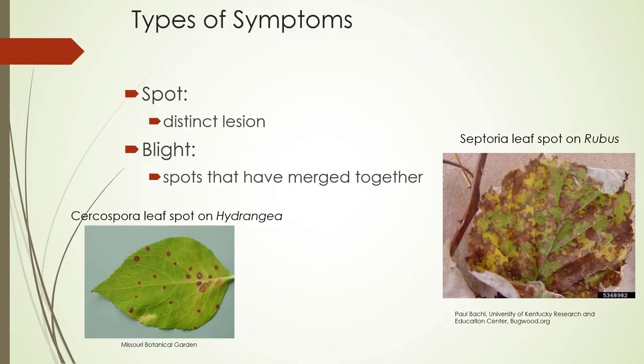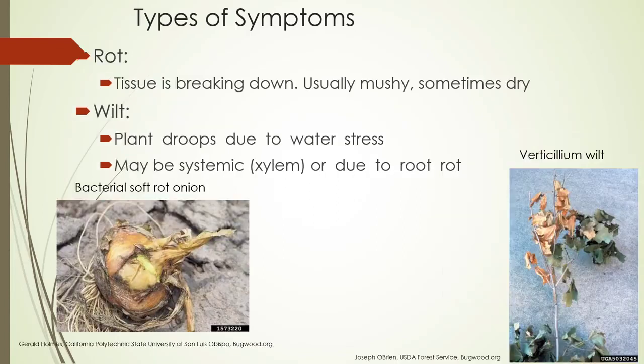Types of symptoms include spots — a distinct lesion. We have a leaf spot here on hydrangea. Blight is when spots have merged together; here's septoria leaf spot on rubus. Rot is tissue breaking down, usually mushy, sometimes dry. Wilt is when a plant droops due to water stress — it may be systemic or due to root rot.